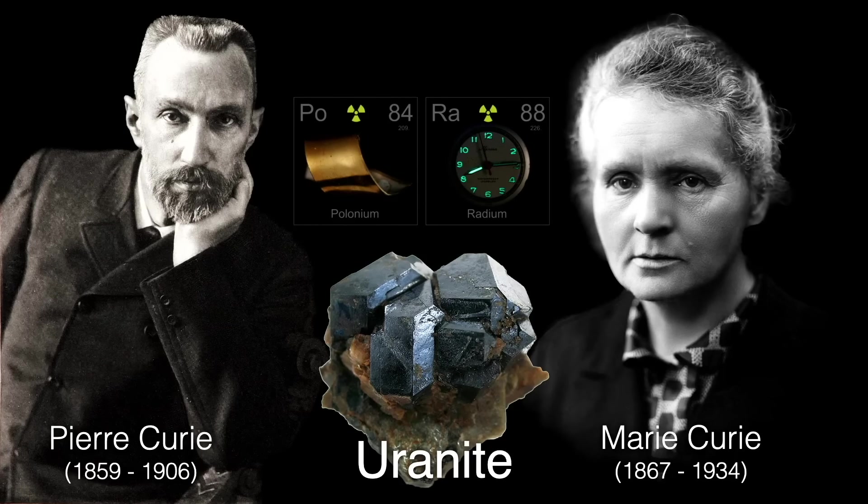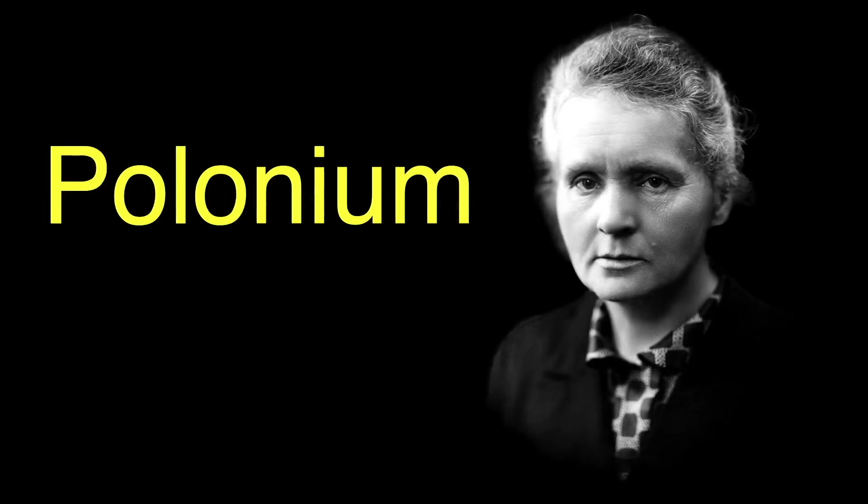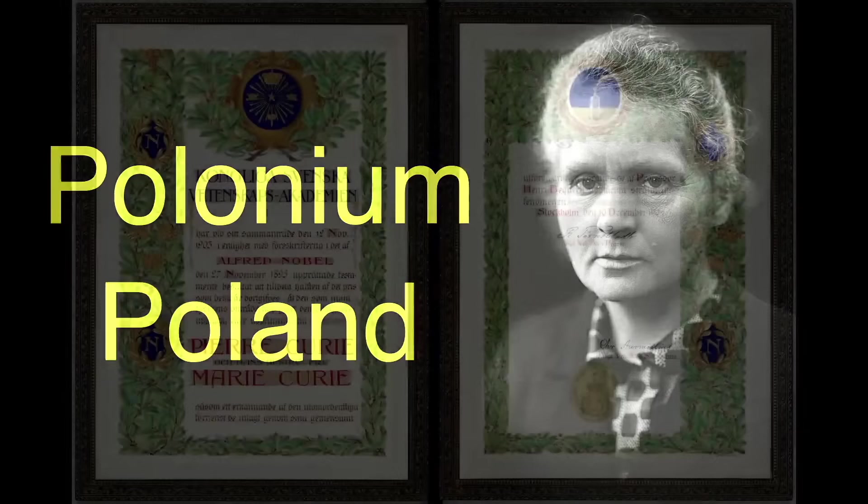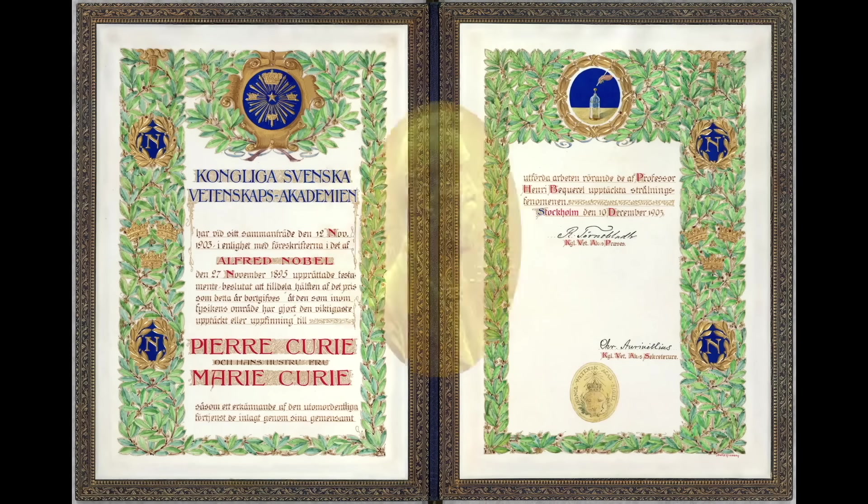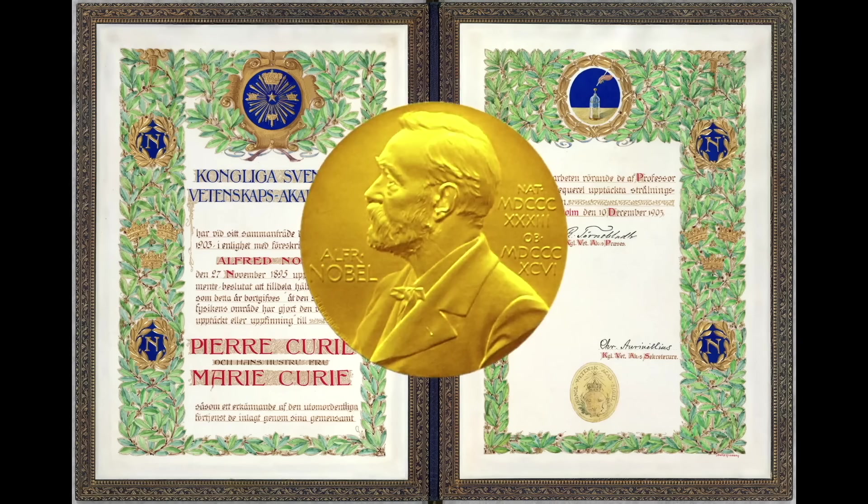This month's element's etymology is simple. Polonium was named after Marie Curie's homeland, Poland. For their work in the field of radioactivity, Marie and Pierre were awarded the Nobel Prize in Physics in 1903.